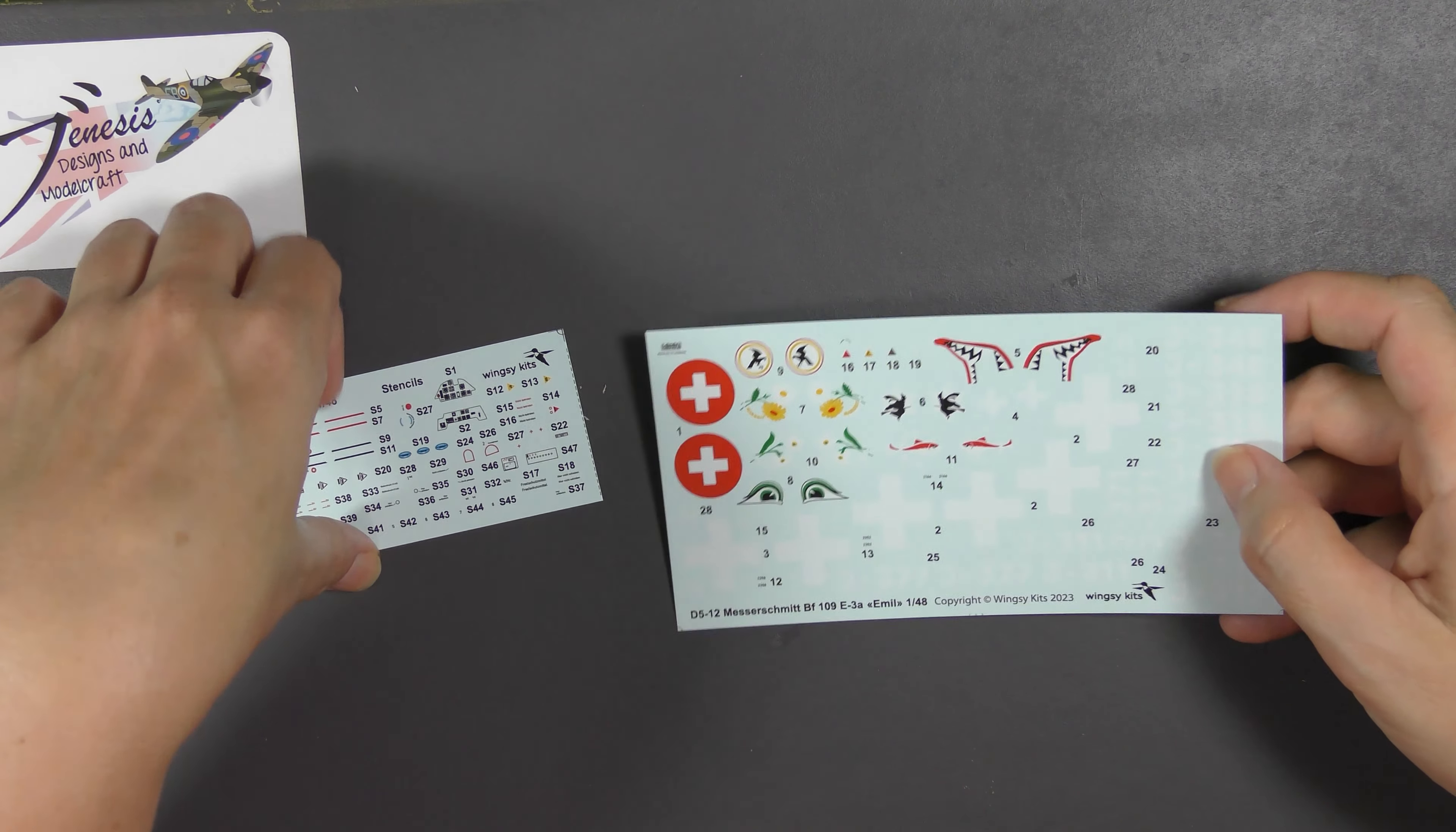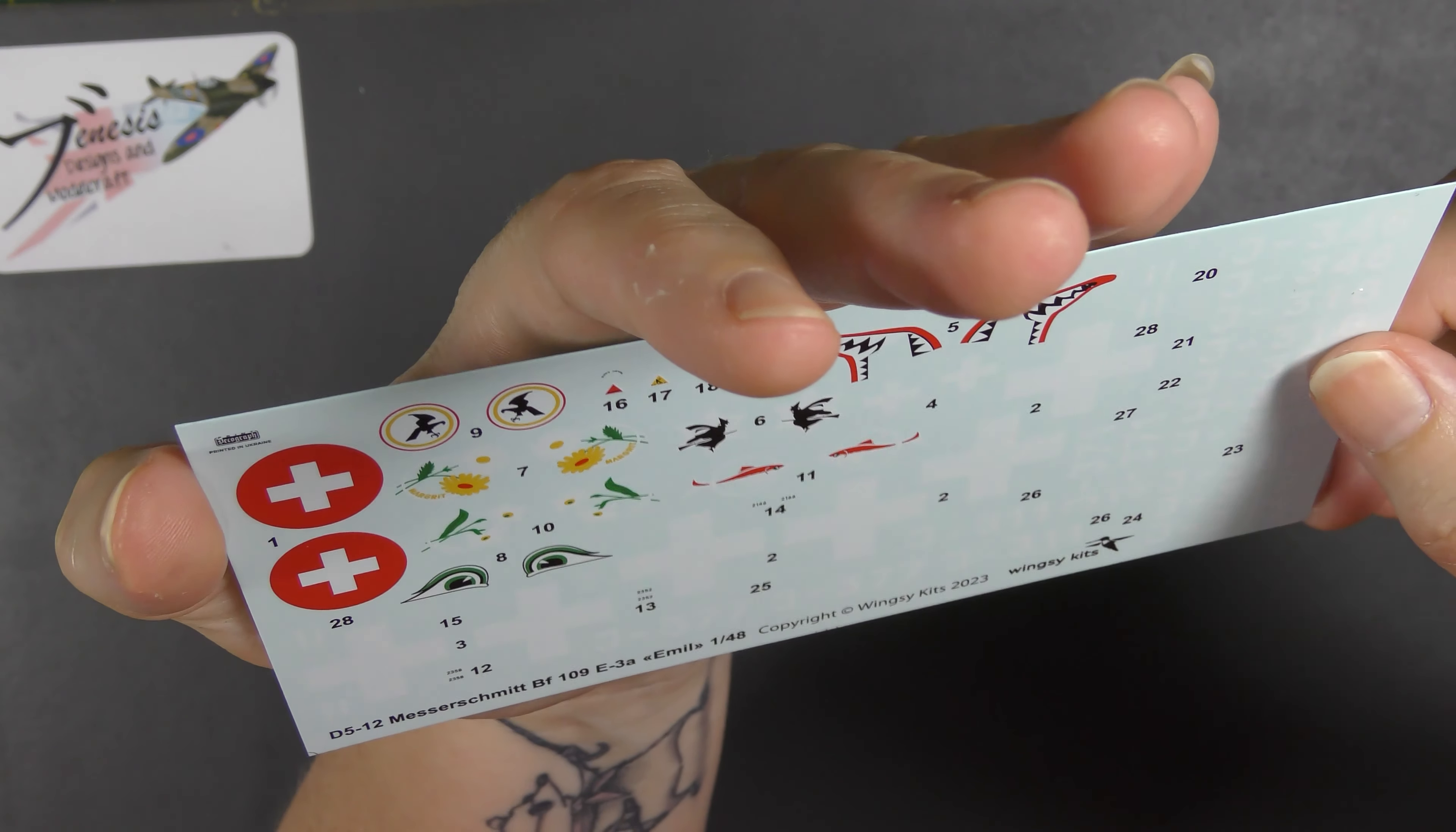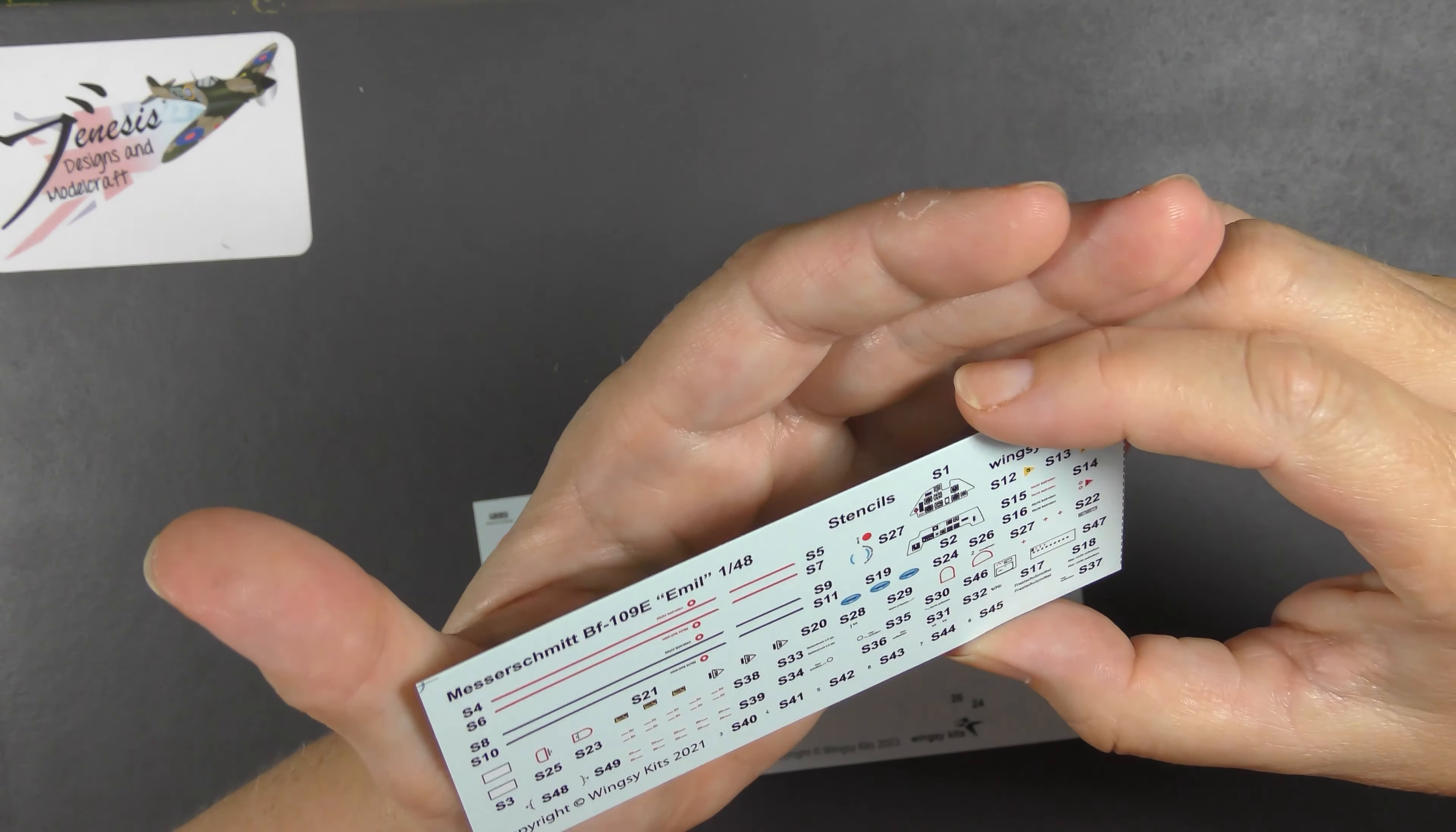We have decal sheets, Print Decal Graph printed in Ukraine. Nothing wrong with these, I've used them in other kits. We have a main markings set up here and these are great - just look at these, big green eyes, flowers, witches, some kind of fishes, a bird that looks halfway between a seabird and an eagle, and teeth as well. All the crosses and numbers.